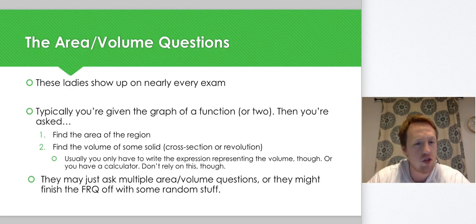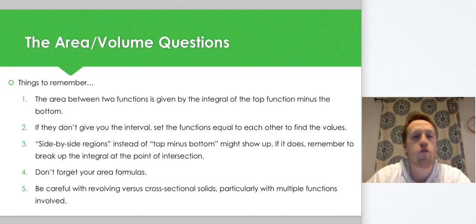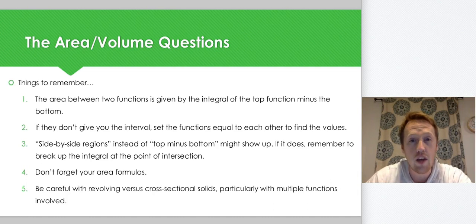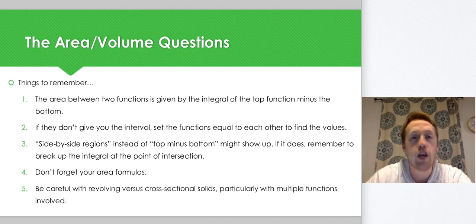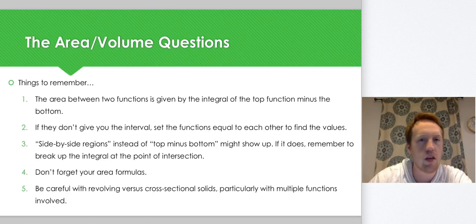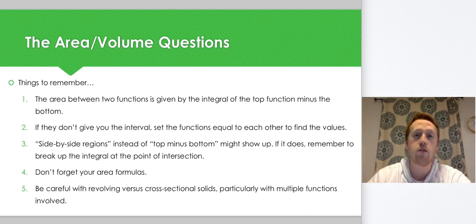Things to remember: the area between two functions is given by top minus bottom — you integrate top minus bottom. If they don't give you the interval, set the functions equal to each other and solve. Sometimes we get side-by-side regions where it switches from one function to the other; in that case we break the integral up at their intersection point, doing the integral from one bound plus the integral from another.